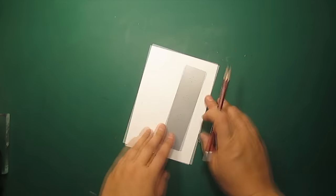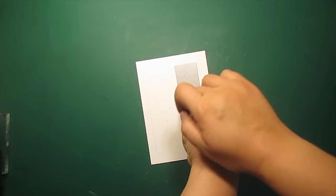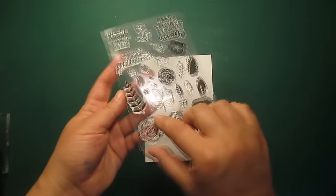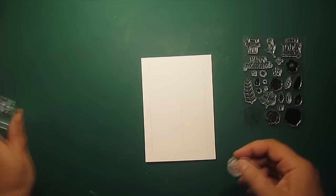I'm positioning the die at the right edge and I'm tracing it with a pencil. I'm going to heat emboss the outline rose image from the Flower Patch Clear stamp set.